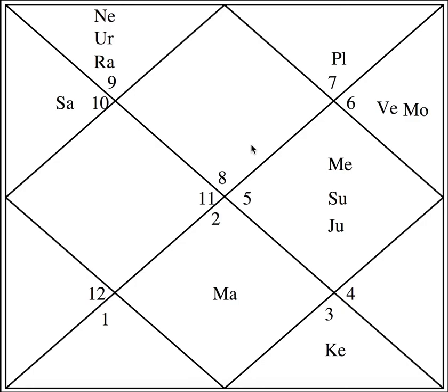Now, how do we interpret this chart? First of all, you have to check where the ascendant lord, the sun, and the moon are sitting. If any planet sits in the ascendant itself, then that planet becomes the most important planet in somebody's horoscope — something the person cannot do away with in this life; they must fulfill the karma related to that planet. Here in the ascendant we do not have any planet, so that condition is ruled out.